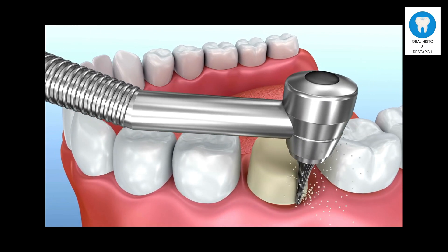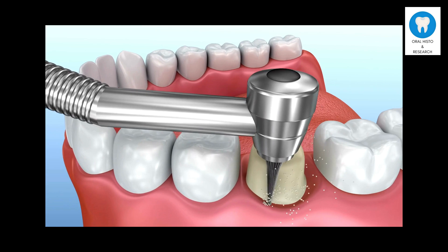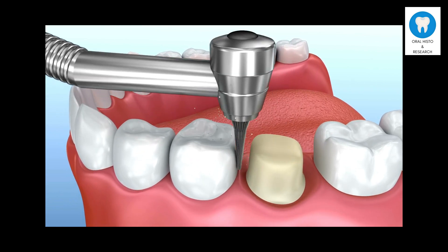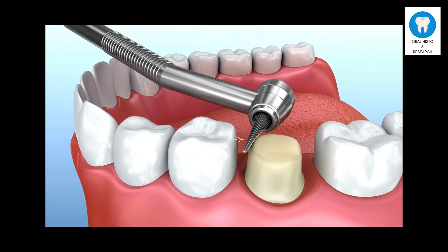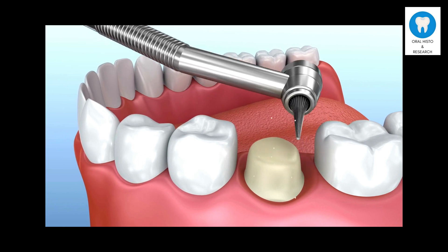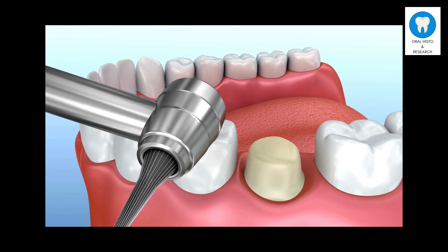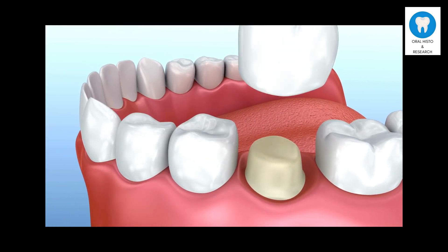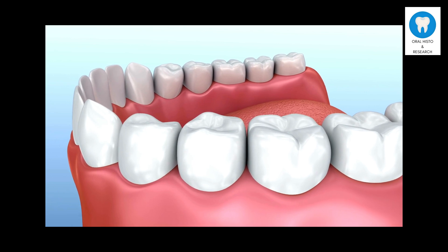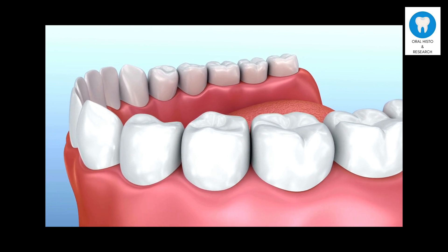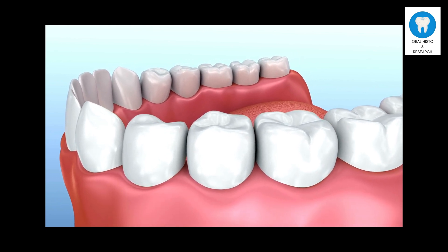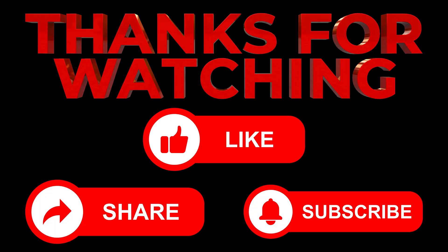Remember that even after a successful root canal treatment, the tooth becomes brittle due to the removal of dental pulp. Therefore, a dental crown is usually placed on top of this root-treated tooth to protect it from the harsh oral environment. Although it involves cutting of the remaining tooth structure to make space for the crown, it is still the best method available to protect the root canal treated tooth.